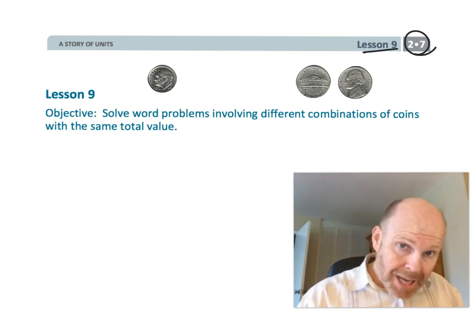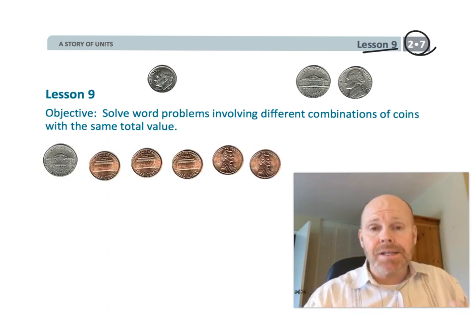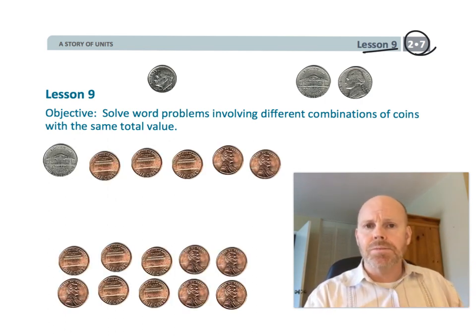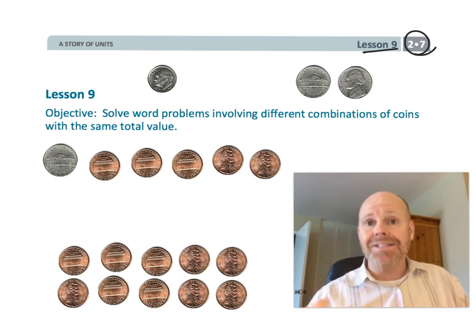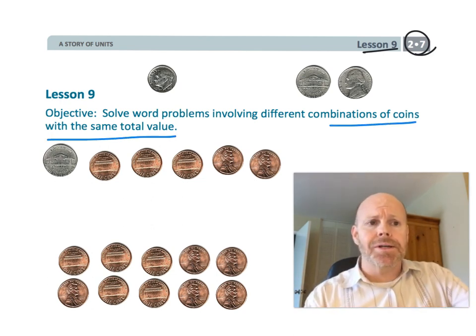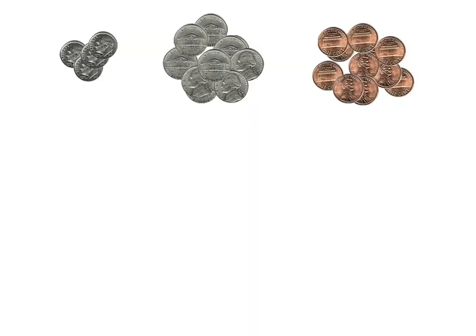That's what we're talking about in terms of combinations of coins having the same value. So let's get started. Another example of this is that you can play a game with your students, have them working in pairs, and find all the different combinations of coins that equal, let's say, 15 cents.